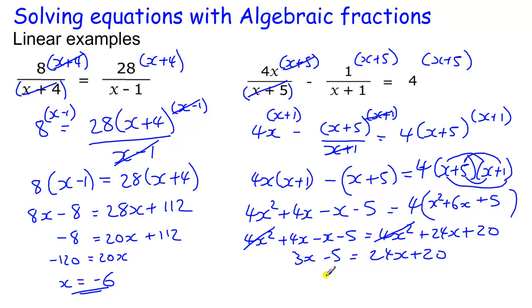Take away the 3x from both sides, so it'll be minus 5, equals 21x, plus 20, take away the 20 to get minus 25, equals 21x, which implies x equals minus 25 over 21, and if you want to make that into a mixed number, you get minus 1 and 4 over 21.